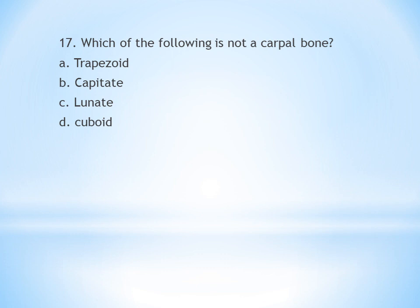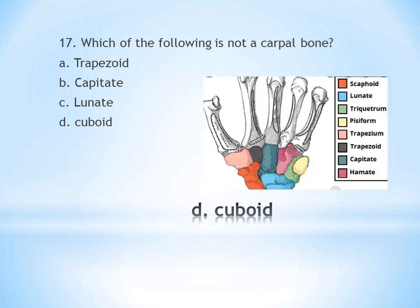Seventeenth question: Which of the following is not a carpal bone? A. Trapezoid, B. Capitate, C. Lunate, D. Cuboid. There are eight carpal bones. Cuboid is not a carpal bone — it is a tarsal bone. Answer is D.